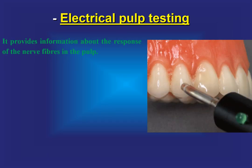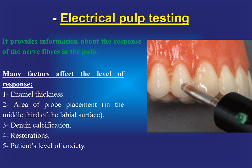Electric pulp tester is a device that provides electrical current. We place it on the labial side of the tooth to transmit electrical current and observe the response of the tooth. It provides information about the response of the nerve fibres in the pulp. Many factors affect the level of response — for example, enamel thickness: the thicker the enamel, the more insulation.